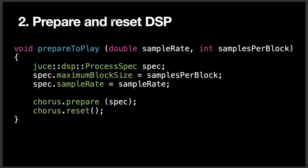At the top of `prepareToPlay`, you have an object called a `ProcessSpec` that needs to be instantiated. The spec is a way that you can let your DSP algorithms know what sort of buffer size and sample rate you're dealing with. So if you're calculating at 44,100 samples per second, your DSP algorithm has to process that amount of audio, versus if it has to calculate at 48,000 samples per second. That's what's so important for these DSP processes to know — how many samples they have to actually calculate per second. From there, we just pass that spec object into our Chorus object and then reset it to make sure there's no junk audio in our buffer.